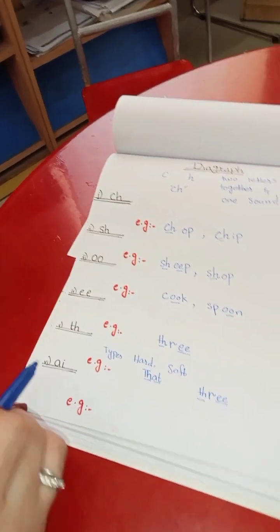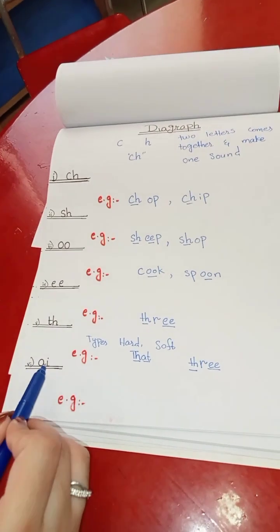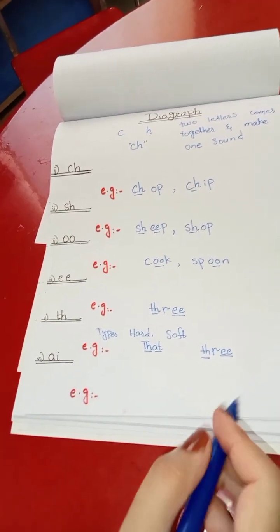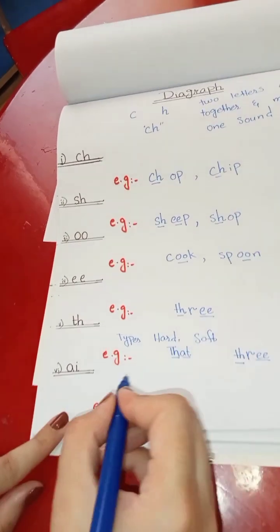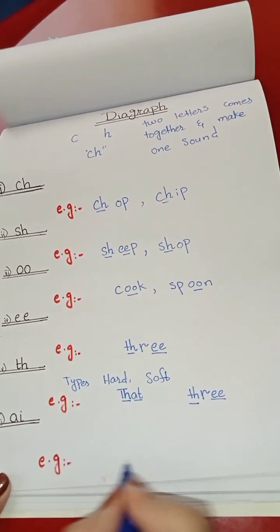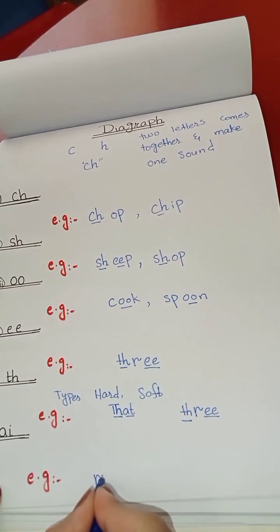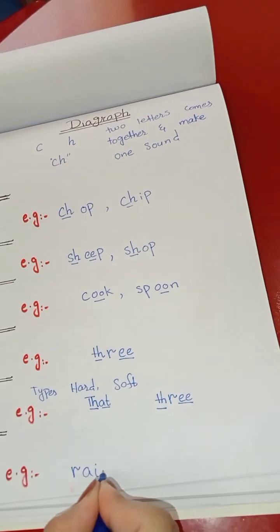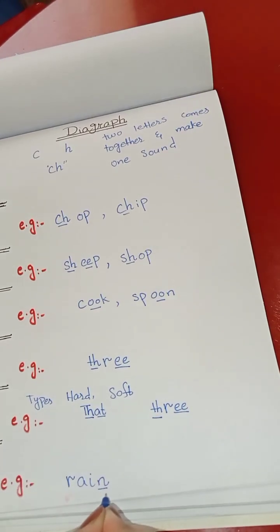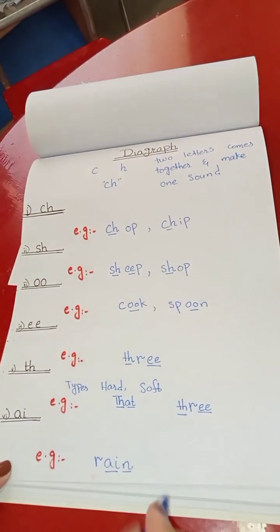The next digraph is AI. A and E come together and make a new sound called 'ai'. Let's learn about the example of this digraph. Like 'r-ai-n' — it will become 'rain'.